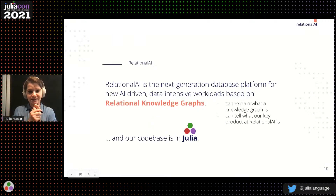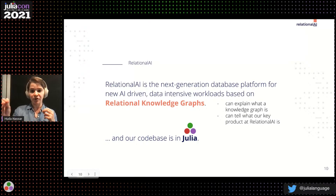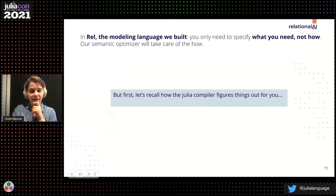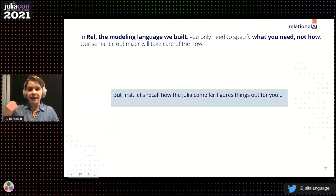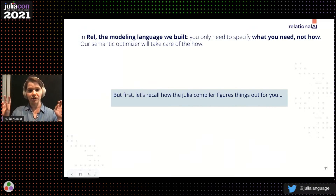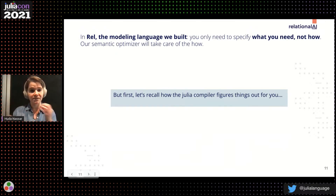By now I hope I've helped you understand what a knowledge graph is and what the key product of Relational AI is. Now I want to switch to the Julia part of this talk. One major statement I love about our modeling language REL: when you specify a query, you only need to specify what you need, not how — just like when I searched for 'Julia' on Google, I just wanted a result without worrying about how it's computed. What happens in the background is that our semantic optimizer takes care of the 'how' — it figures out the algorithm for you.